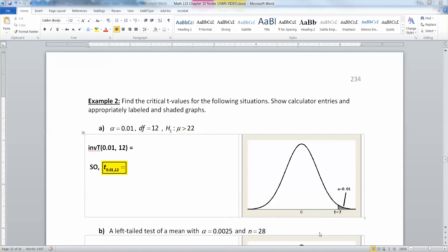In this example, we're going to remind ourselves how to find the critical t values. But this time, these are going to be for right-tailed, left-tailed, and two-tailed tests, unlike just for the confidence interval, which we found in chapter 9. Okay, so let's start off with the first one.